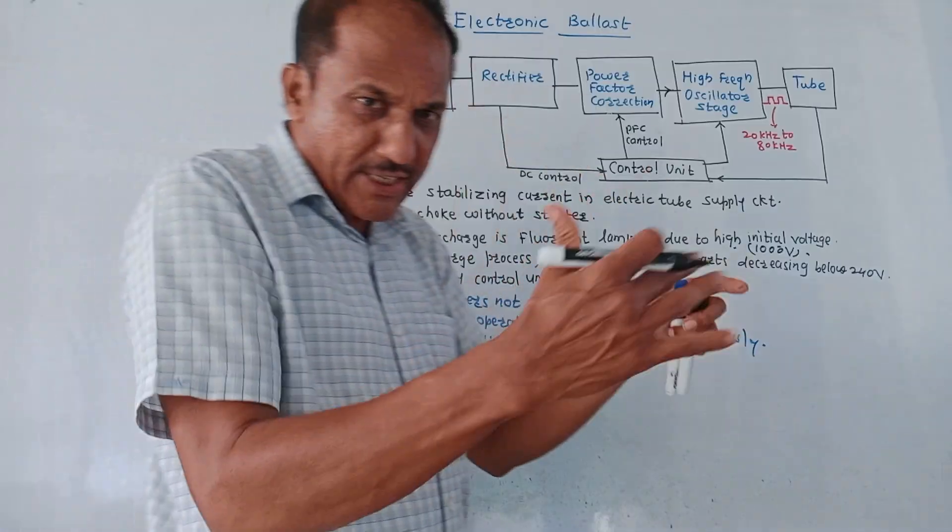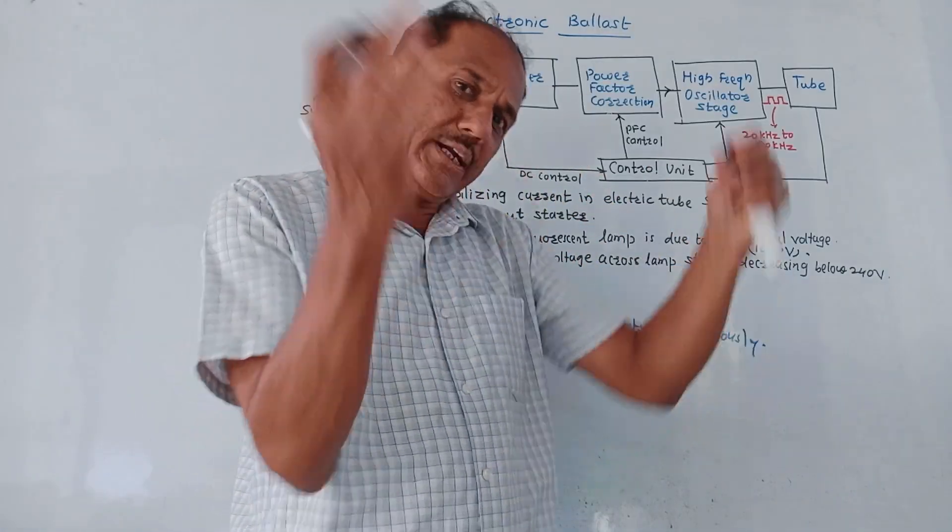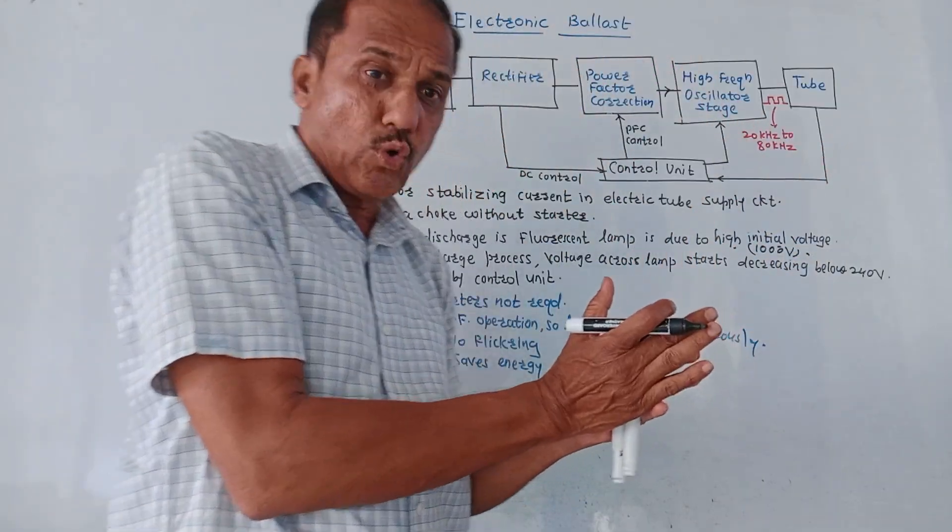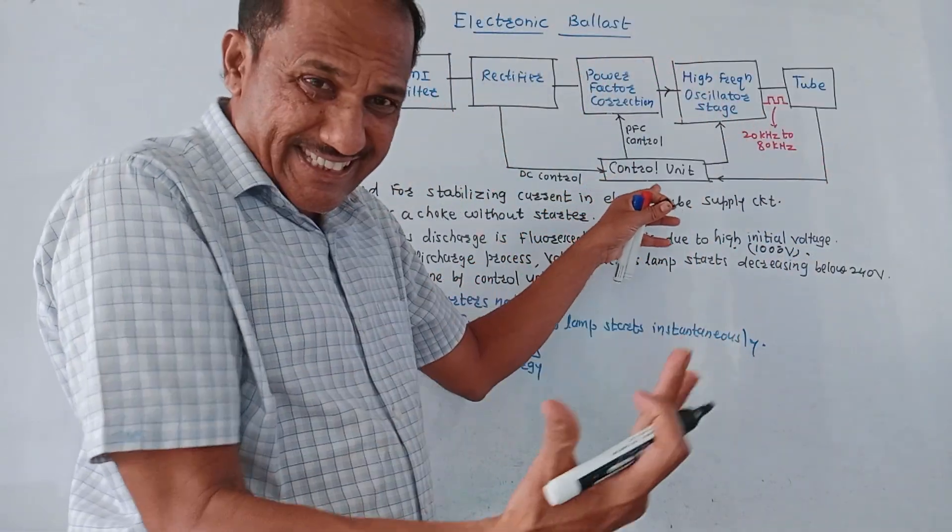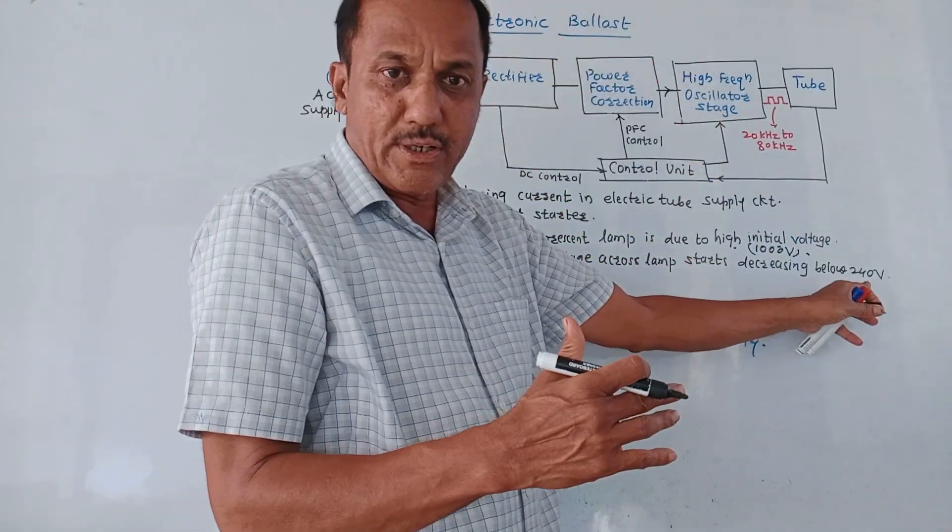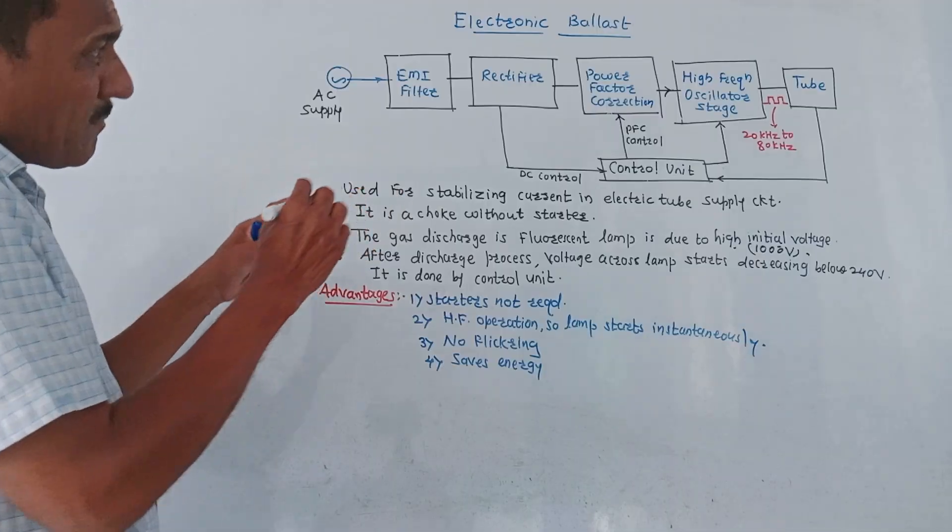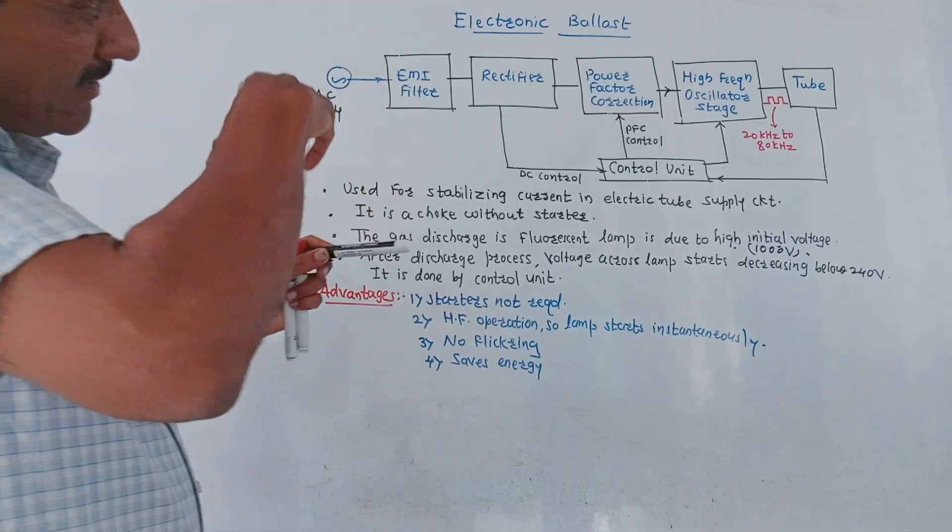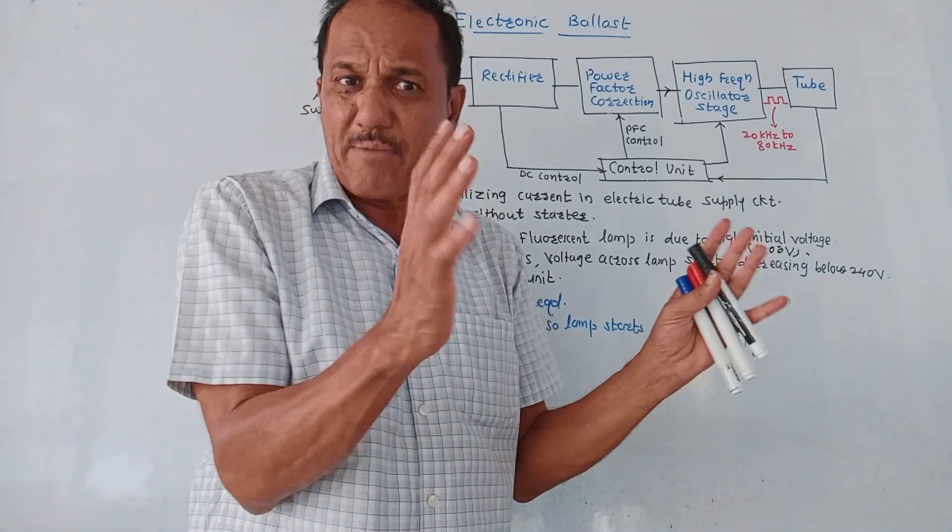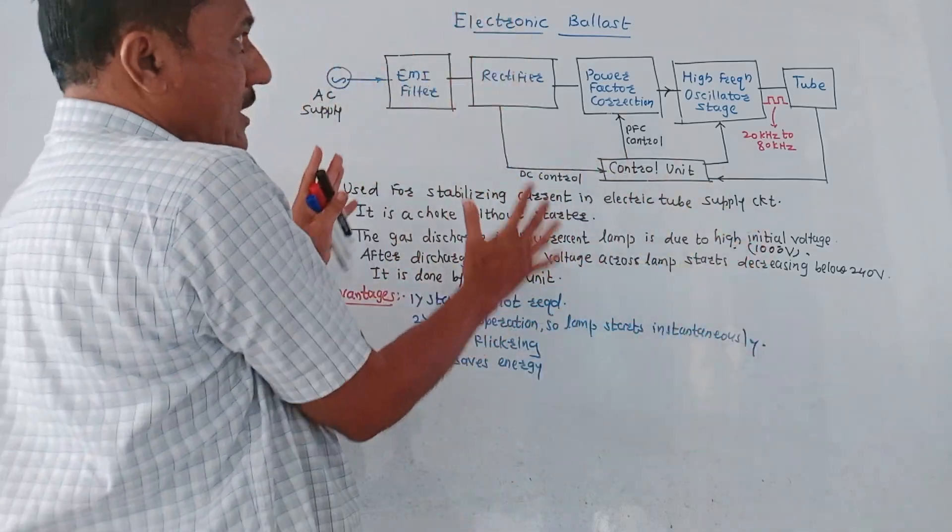It is done by using the control circuit. Initially, gas discharge is created by providing higher voltage around 1000 volt. Then control unit sends the signal and maintains the voltage which is below 240 volt. So due to this, the constant current as well as constant voltage across the lamp is maintained, and this is the major function done by the electronic ballast circuit.